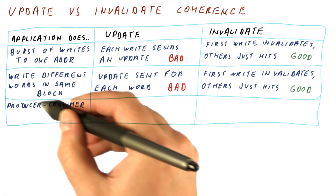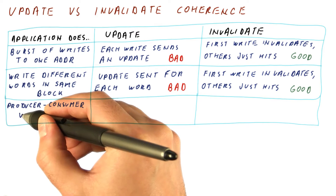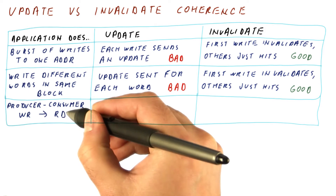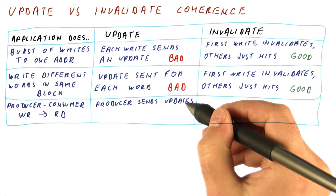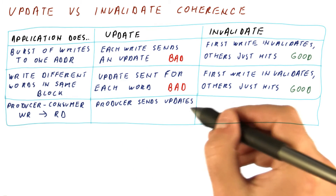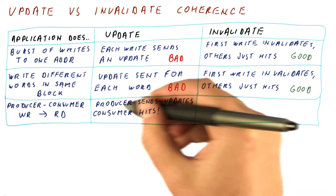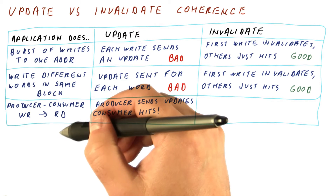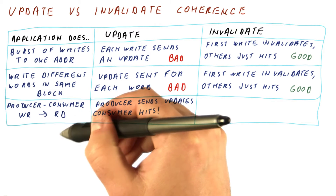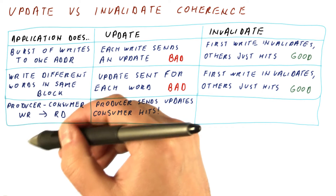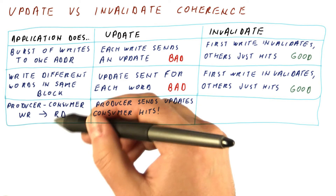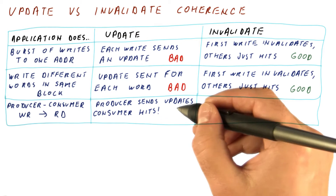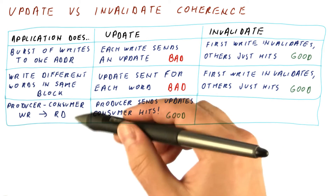The final scenario is the producer-consumer scenario, where one core keeps writing data and another core reads it. For the update protocol, the producer sends updates every time it modifies the data, and the consumer finds the data in its cache. For example, if there is a buffer, the first pass puts it in the cache, and then reads keep it there while writes put new data in the buffer so the consumer gets it from its own cache. This is not great, but it's about as good as this scenario gets, because the data really has to get from one place to the other.